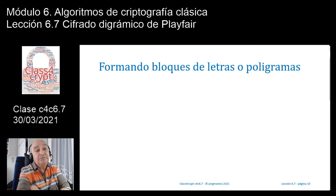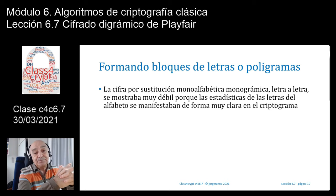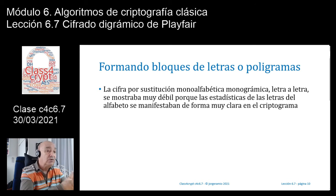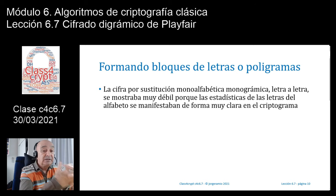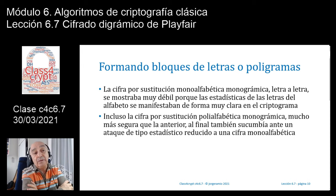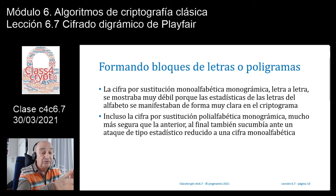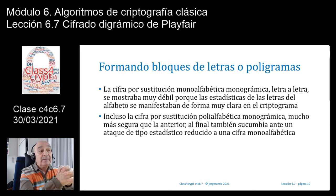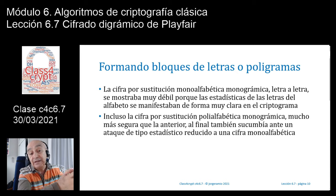Ahora hay que ir formando un bloque de letras o poligramas para poder cifrar la información. Si recordamos, la cifra por sustitución monoalfabética monográmica, es decir letra a letra, la que correspondía al cifrado del César o la cifra del tipo afín, veíamos que se mostraba tremendamente débil porque las estadísticas claras del lenguaje se manifestaban de forma muy patente en el escrito cifrado. Era tremendamente fácil detectar dónde estaban las letras más frecuentes.